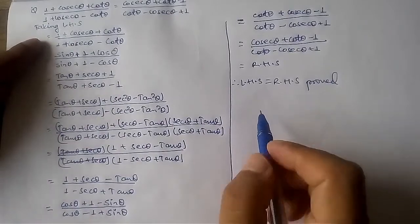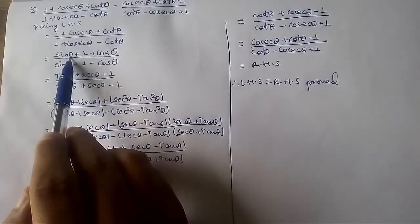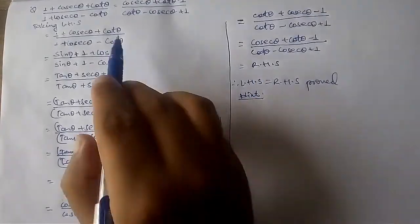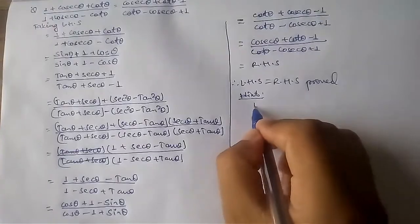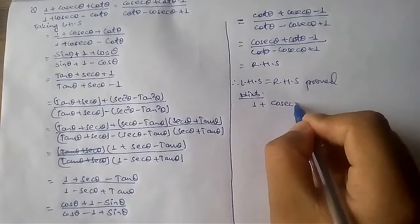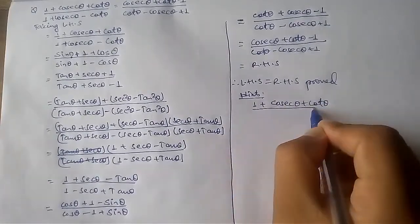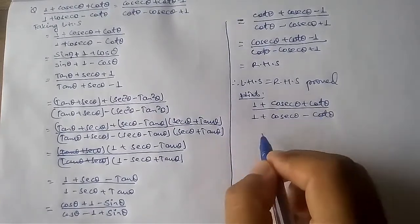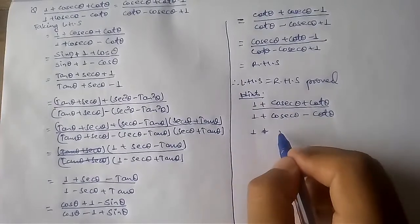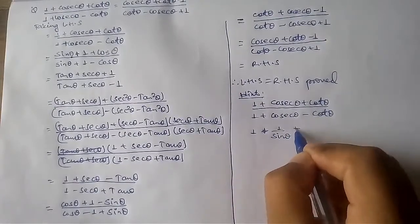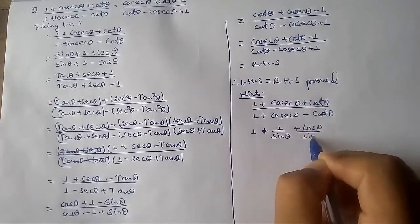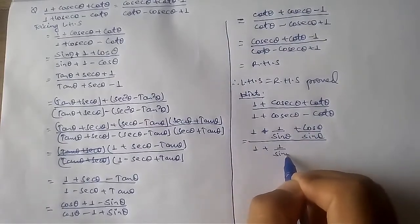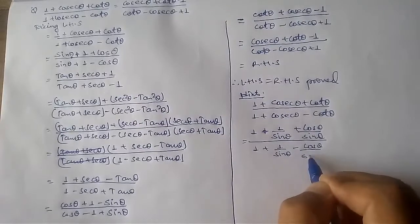I think you may be a little confused at the second step — how it comes. Just see here: I have written hints and I will solve only one, then you will know the others. It is 1 plus cosec theta plus cot theta divided by 1 plus cosec theta minus cot theta. Cosec means 1 over sin theta, and cot means cos theta over sin theta.